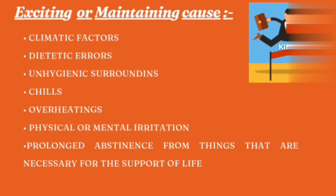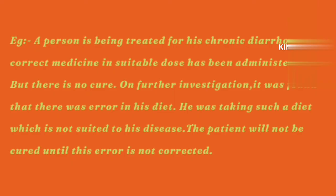Exciting and maintaining cause can also work as an obstacle to cure. If despite proper medicine, proper dose, and proper repetition the cure is not happening, we need to look at this as well. For example, a patient suffering from chronic diarrhea is being given the perfectly correct medicine at suitable dose, but there is no improvement. On further investigation, it is found that the problem is in the patient's diet — despite having diarrhea, the patient is taking a rich diet which is not suitable. No medicine, however good, can cure this until the dietary error is corrected, because dietetic error is working as an obstacle to cure. Once the diet is corrected along with the medicine, the patient will recover completely.